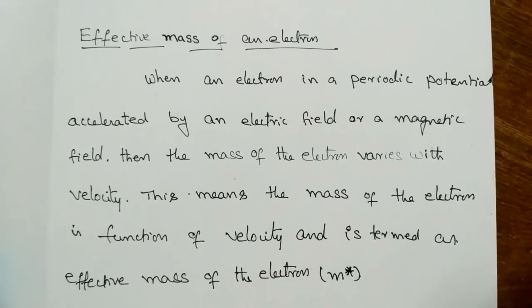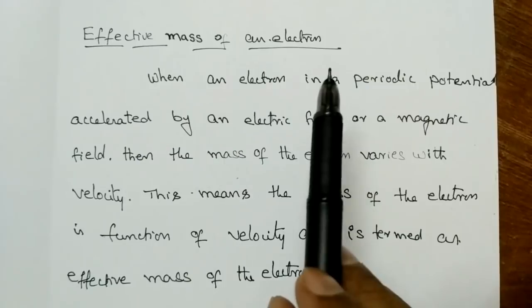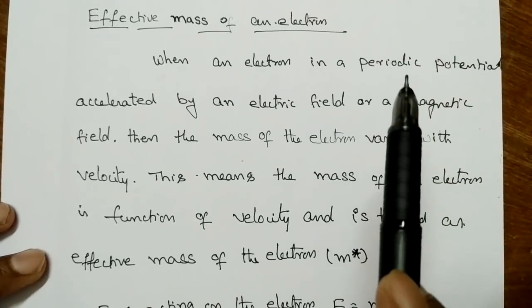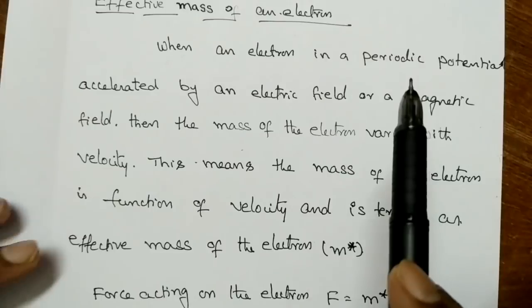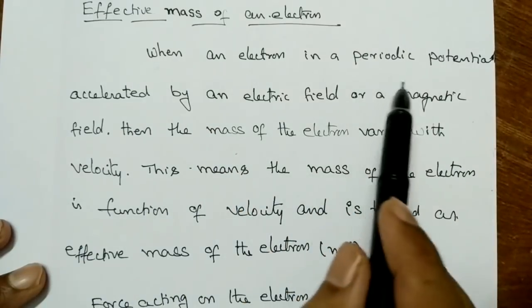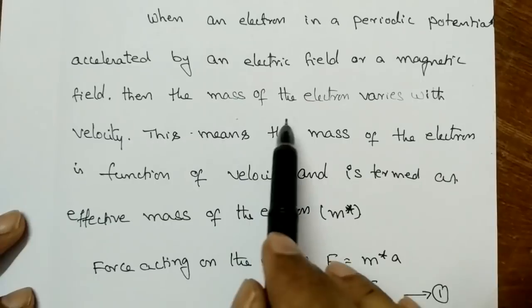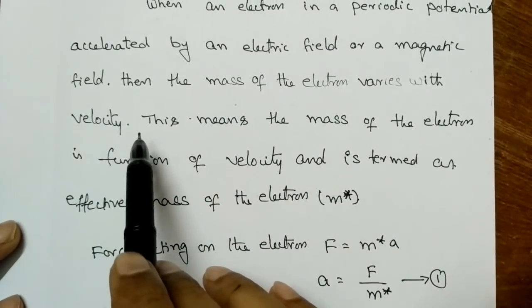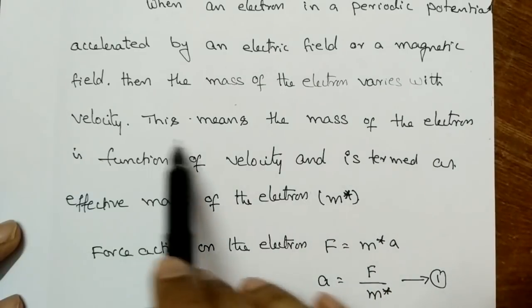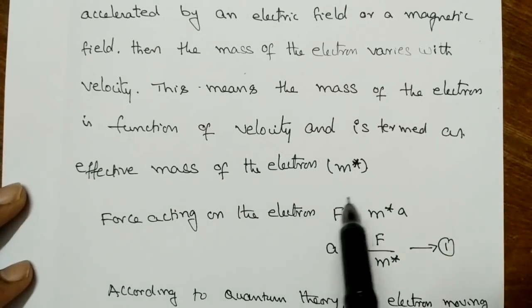Today's topic is the effective mass of an electron. Effective mass means the mass is not constant everywhere — it changes from place to place in the lattice according to zone theory or band theory. When an electron in a periodic potential is accelerated by an electric or magnetic field, the mass of the electron varies with velocity. The mass as a function of velocity is termed the effective mass of the electron.